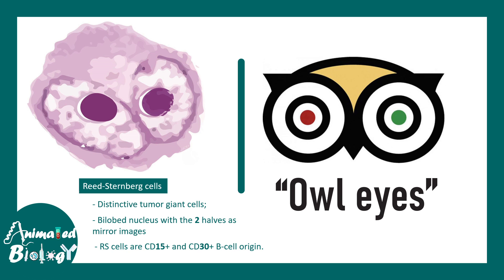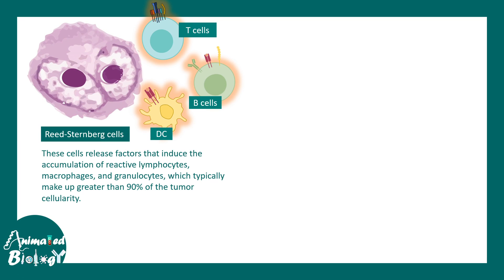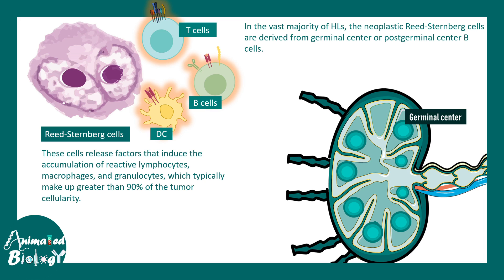Reed-Steinberg cells are some sort of altered, mutated B cells. In the vast majority of Hodgkin's lymphoma cases, neoplastic Reed-Steinberg cells are derived from the germinal center. In the lymph node, you can see circular structures — the germinal centers within lymph follicles. Each lymph follicle has a central germinal center region where Reed-Steinberg cells can be found.